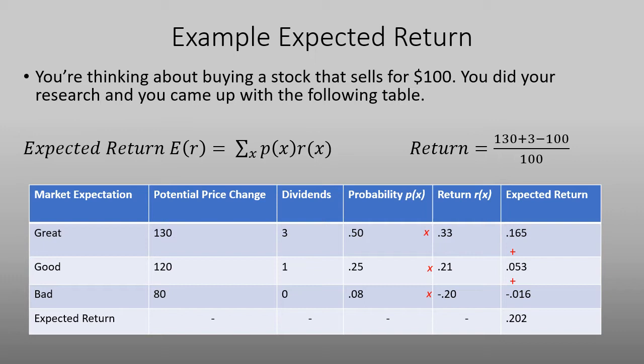Now we'll look at how to calculate everything on the market expectation of great. So you did your research and you found that the potential price change could be $130, let's say in the next year. And you found that in that year, you'll receive a $3 dividend.